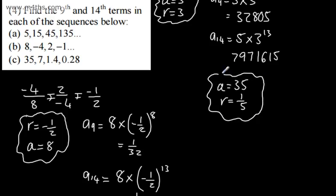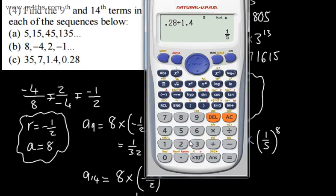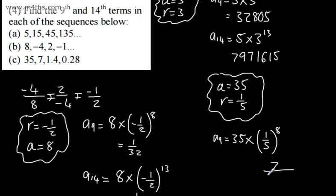We can see this is going to get very small. So the ninth term, A9, is going to be equal to 35 multiplied by 1 fifth or 0.2 to the power of 8. Let's go ahead and do that — 35 times by 0.2 to the power of 8 — and that is going to give me 7 over 781,25. I'll write that as an exact fraction — that's the ninth term.